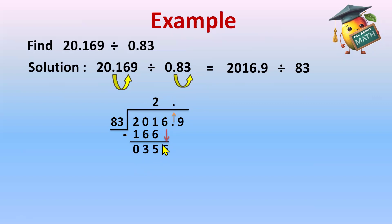Now the 6 will come down and we have 356. 83 fours are 332. Now we will do the subtraction. 6 minus 2 is 4, and 5 minus 3 is 2, and 3 minus 3 is 0.